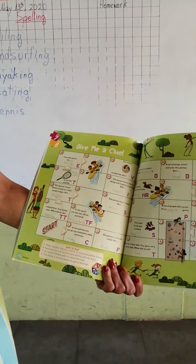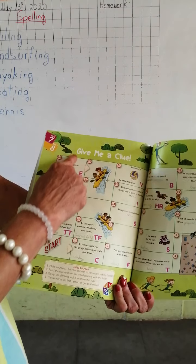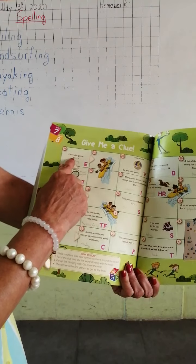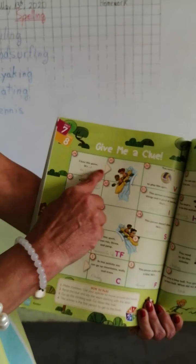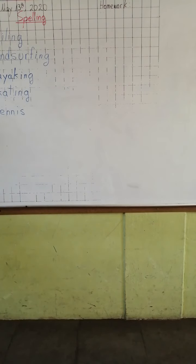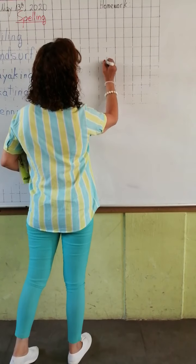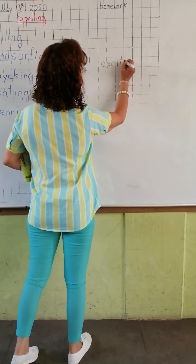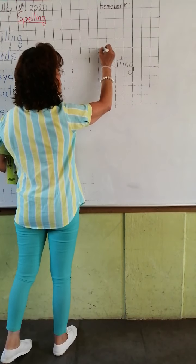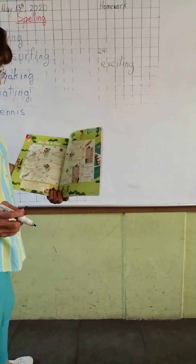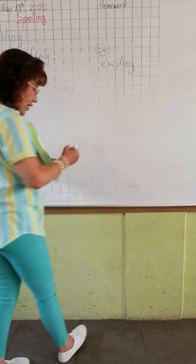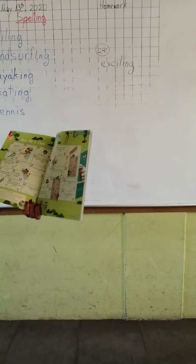Pay attention, kids, because you are going to write at the top of each question. For example, 'I love this game' — it starts with letter E. Do you think that the word is exciting? Yes, emocionante. You are going to write in the first box the word 'exciting.' We are going to start with number 24.